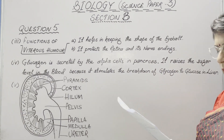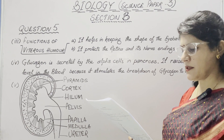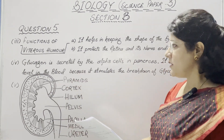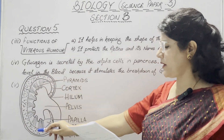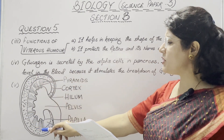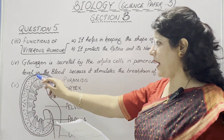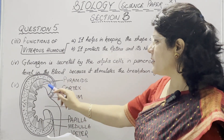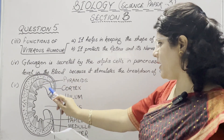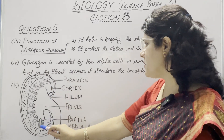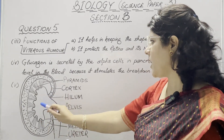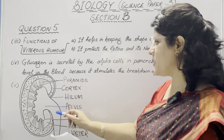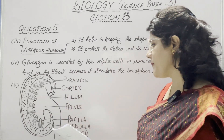Next, we draw a neat labelled diagram to show the internal structure of a human kidney. The dotted structure is the cortex, in which the PCT and Bowman's capsule lie. The pyramids and lighter portion form the medulla. There is the papilla, and the cup-shaped pelvis, and the tube known as the ureter, which carries urine to the urethra.